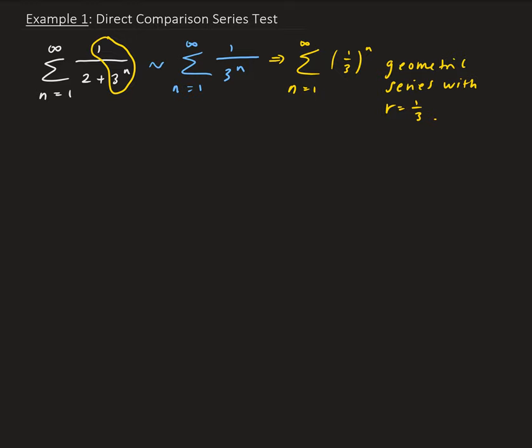So now, since, and this is converging, since r is, since r is less than, it's between, it's less than one. It's between zero and one. So this is converging.